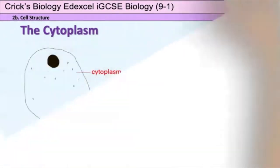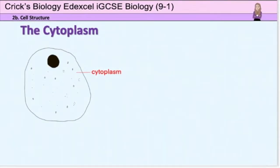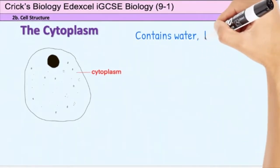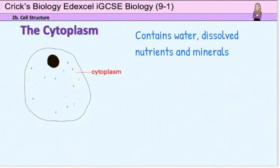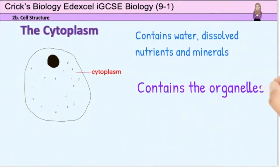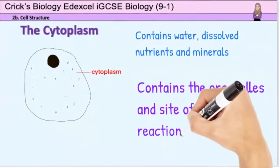The cytoplasm makes up the bulk of the cell. It is jelly-like in structure and contains water, which allows substances such as nutrients and salts to dissolve in it and for chemical reactions to occur. It contains the organelles of the cell — the tiny structures that have specific jobs inside the cell to allow the cell to be alive. So in an exam when asked what the cytoplasm's role is, it is where the organelles are found and the cytochemical reactions take place.